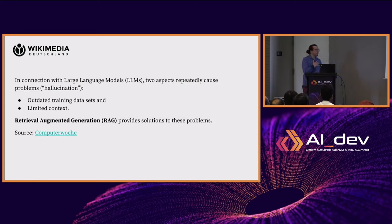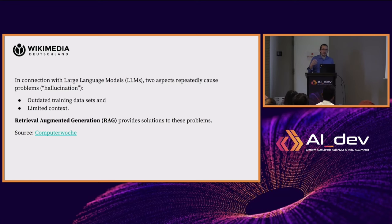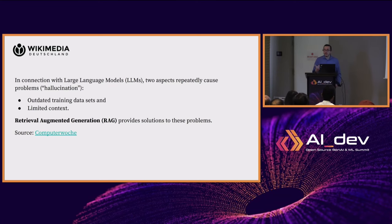Large language models have two major issues. The datasets are outdated from the point at which the model is released — it's a static snapshot — and then there's the limited context window, typically a few thousand to 8,000 or 16,000 tokens. We decided we could make Wikidata's information more accessible in the right format for people who build large language models and applications on top of them — for retrieval augmented generation — to be able to use our data within them.